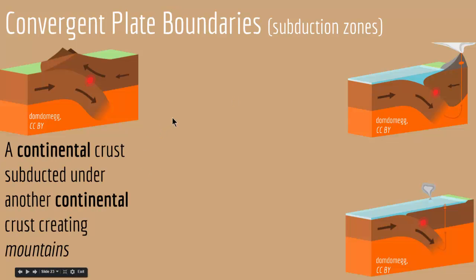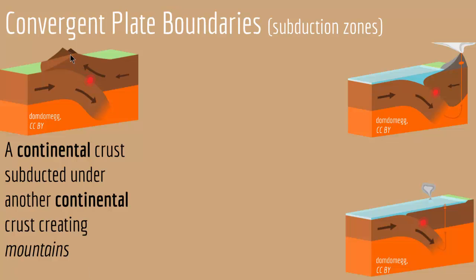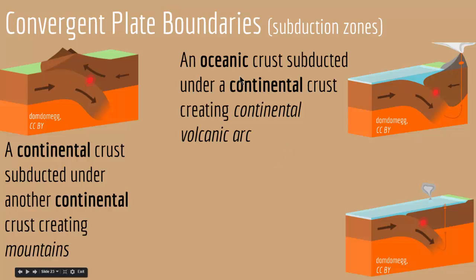In the first type, when two continental crusts collide, one is subducted and as a result we get mountains — one continental crust goes up and creates mountain ranges. In the second type, an oceanic crust is subducted under a continental crust, and as a result we get a continental volcanic arc. When the oceanic crust goes down, it melts and the magma comes up, creating the volcanic arc.